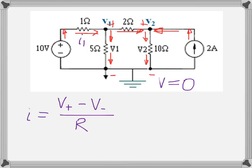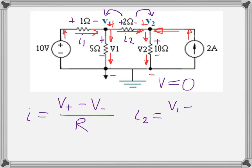Following the same method, we identify the current in each branch. To avoid mistakes, let's assign polarities across each resistor according to the current direction: 1 Ohm gets plus and minus, then 5 Ohm plus and minus, 2 Ohms plus and minus, 10 Ohms plus and minus, and 2 Amps is the already-known current source. Let's also write current I2, the current between V1 and V2 through the 2 Ohm resistor. From Ohm's law: I2 = (V1 − V2) / 2.